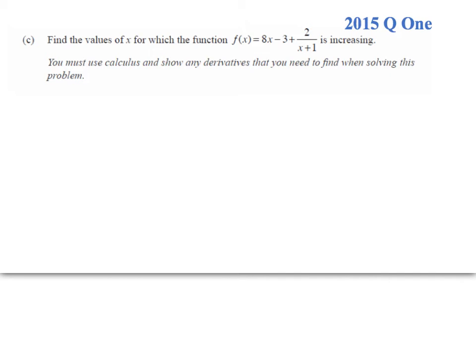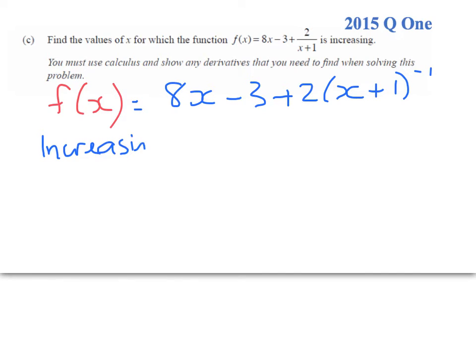In this question we have to find the values for which a function is increasing. And we've got to use calculus and show derivatives to do it. So I'm going to start by rewriting the function out like this, so that I can easily differentiate it. For increasing, for an increasing function, we must have the gradient is strictly positive.